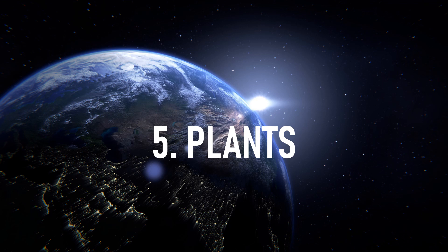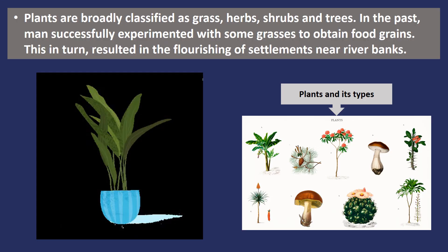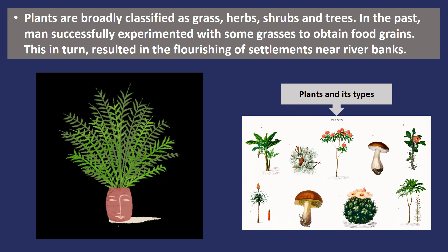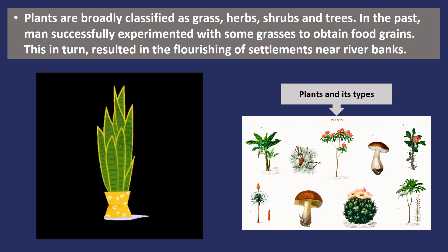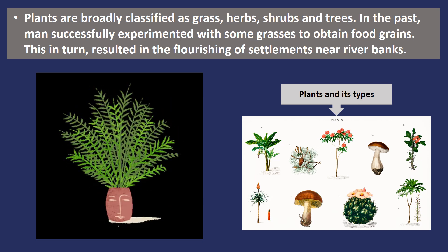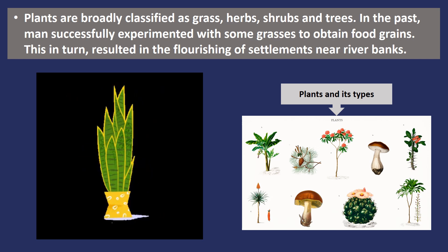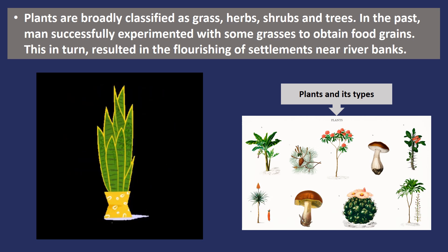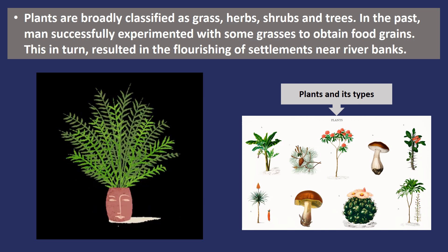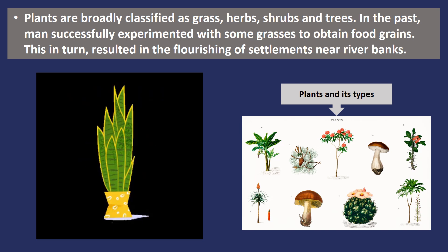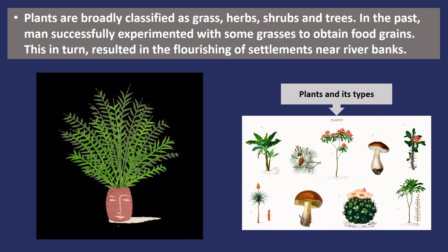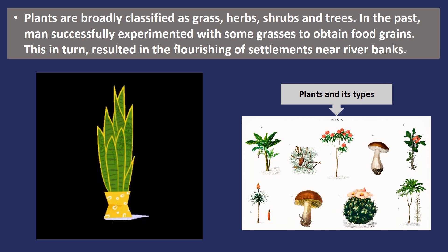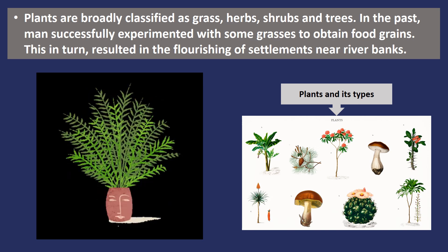We obtain different things from forests — honey, resin, rubber, latex, wood, etc. There are various plants on the land surface, broadly classified as grass, herbs, shrubs and trees. In ancient times, man successfully experimented with some grasses to obtain food grains. Due to this, he stopped wandering in search of food and settled near the basins of the Huanghe, Sindhu, Nile and Euphrates rivers. He started growing crops, which resulted in the flourishing of settlements near river banks.